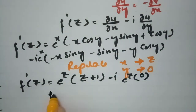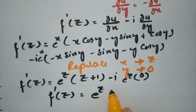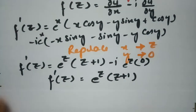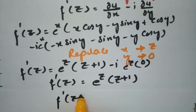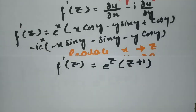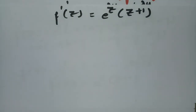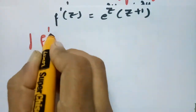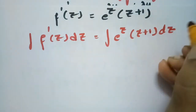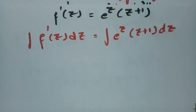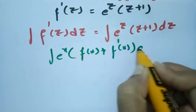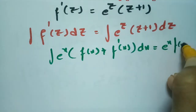What remains is f'(z) = e^z·(z + 1). Now we have to integrate both sides: ∫f'(z) dz = ∫e^z·(z + 1) dz. Using the formula ∫e^x·[f(x) + f'(x)] dx = e^x·f(x) + c, here f(z) = z and f'(z) = 1.